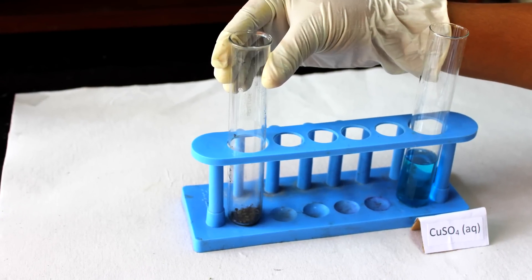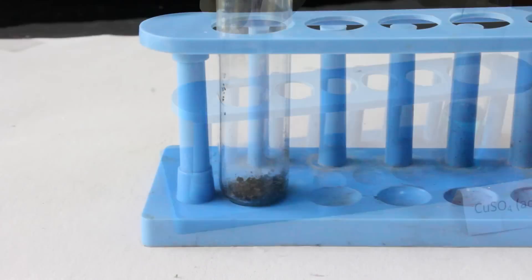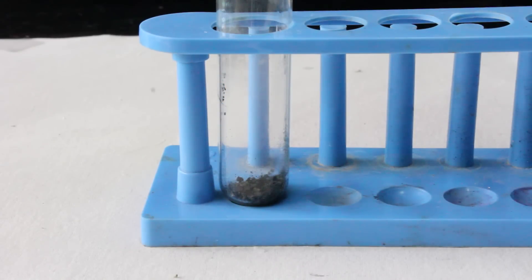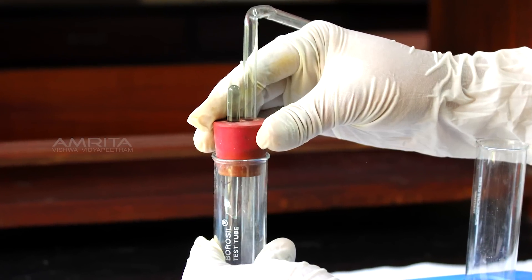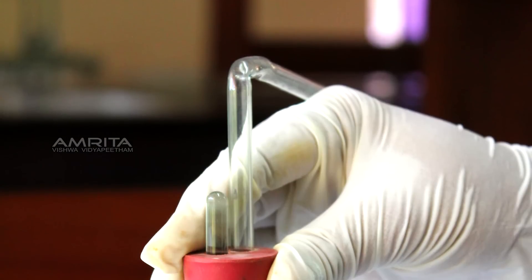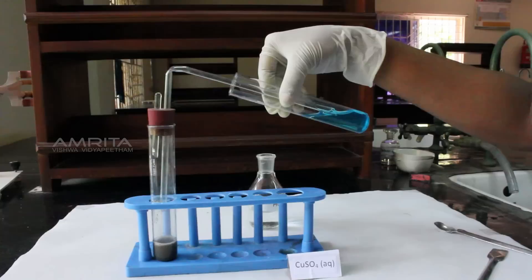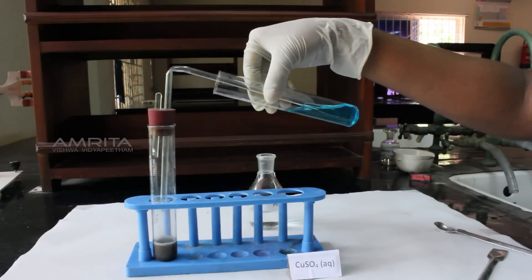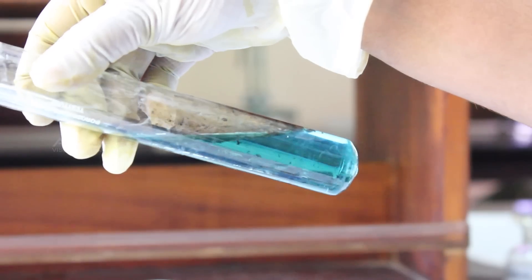Similarly, transfer a small quantity of compound to a boiling tube and add a small quantity of dilute HCl into it. A gas evolves in the boiling tube. Now, cork the boiling tube which has a bent tube connected to it. Insert the other end of the bent tube to copper sulphate solution.